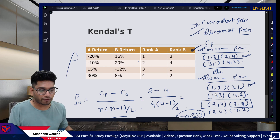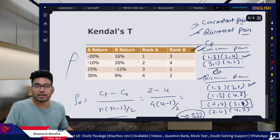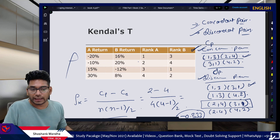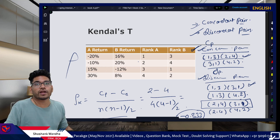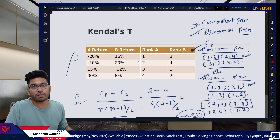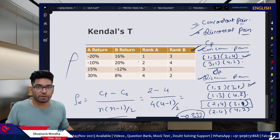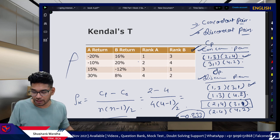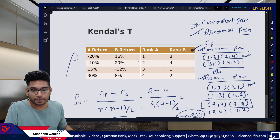That covers everything about Spearman's correlation coefficient and Kendall's tau, which are the nonlinear correlation measures of the relationship between two random variables. Thank you for listening — see you in the next video.